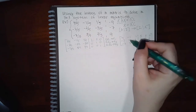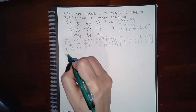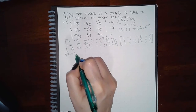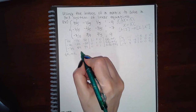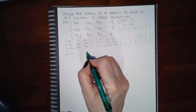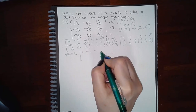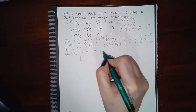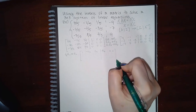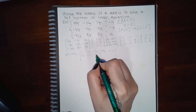This diagonal entry needs to be a one, so we're going to do one-fourth times row one to get a new row one. That gives us: 1, -1/4, 1/4 | 5/4, 0, 0. The other rows stay the same for now.